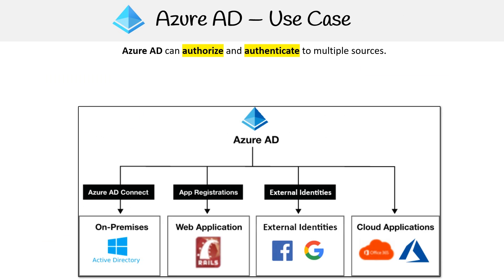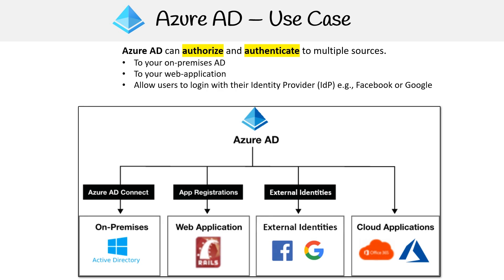In terms of the use case for Azure AD, it's for authorizing and authenticating to multiple sources. You can authorize and authenticate to your on-premises Active Directory, to your web application, and it allows users to log in with their identity provider — like Facebook or Google. You can also connect to Microsoft 365 or Microsoft Azure; Azure AD takes care of all this.